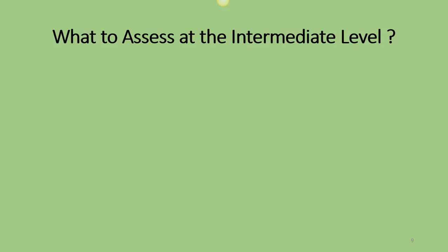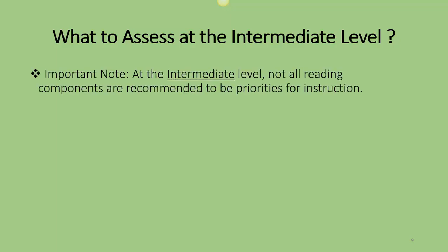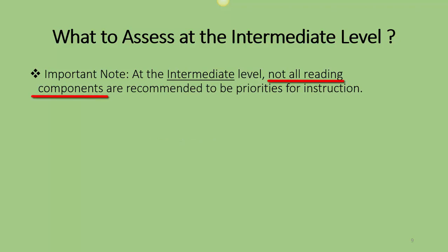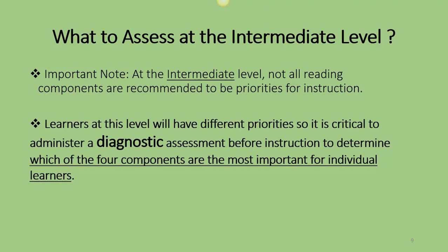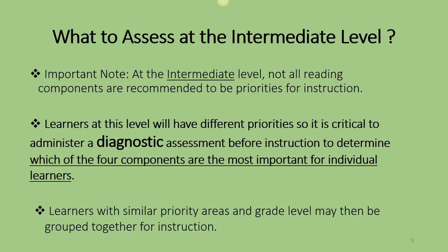At the intermediate level, not all components of reading are recommended to be a priority for instruction. Learners at this level have different priorities, so it's critical to administer a diagnostic assessment before instruction to determine which of the four components are the most important for individual learners. Comprehension can be affected by gaps in the other three components, so that should be the last component you focus instruction on. Learners can be grouped by similar priority areas and grade levels.